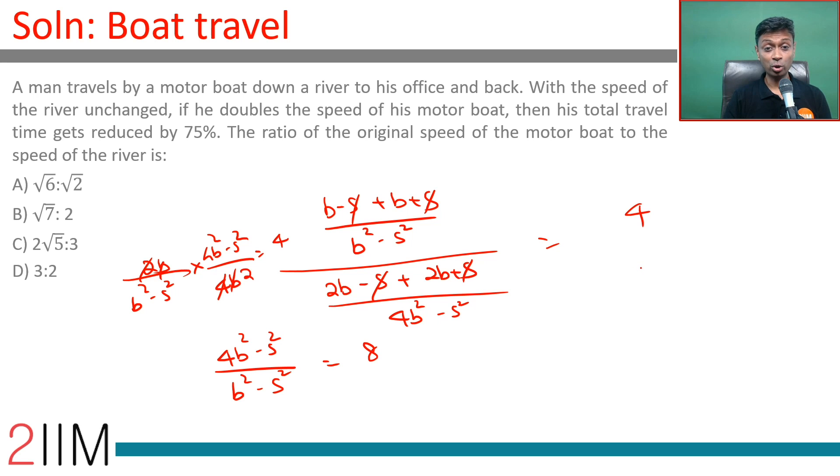We want to find original ratio of speed of motorboat to that of river. We want to find B by S. Let's say B by S is equal to K and for that B square by S square is equal to K. This is 4K minus 1 by K minus 1 is 8. 4K minus 1 is 8K minus 8. 8 minus 1 is 4K or K is 7 by 4. Or the ratio we are looking for is the square root of 7 by 4 or root 7 is to 2.